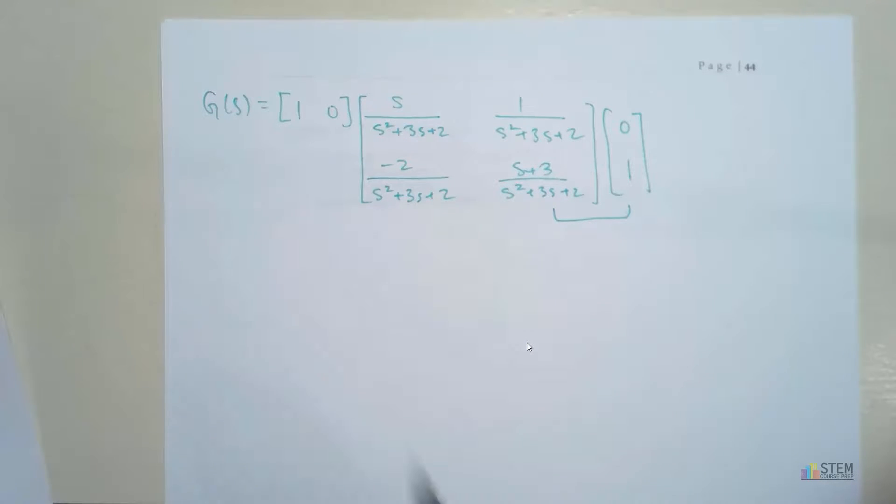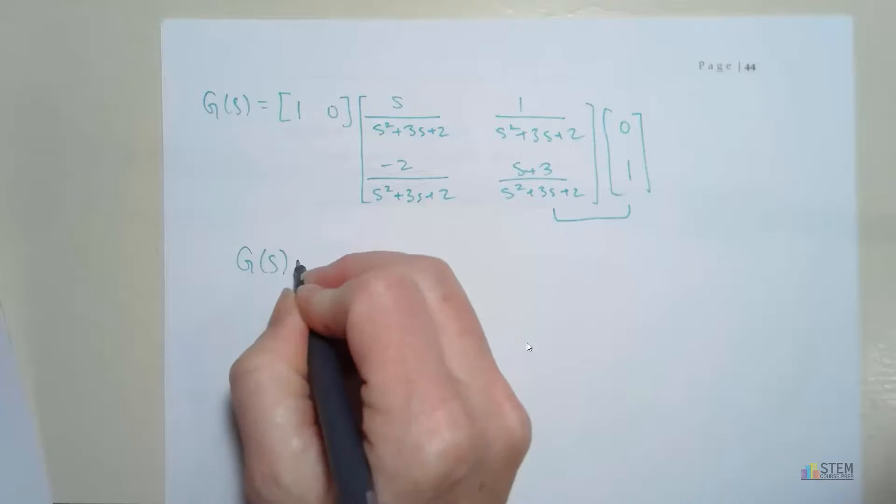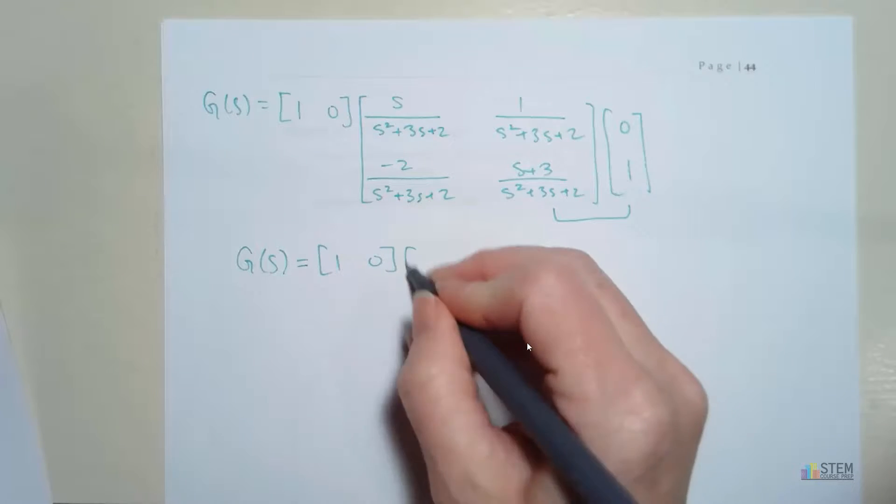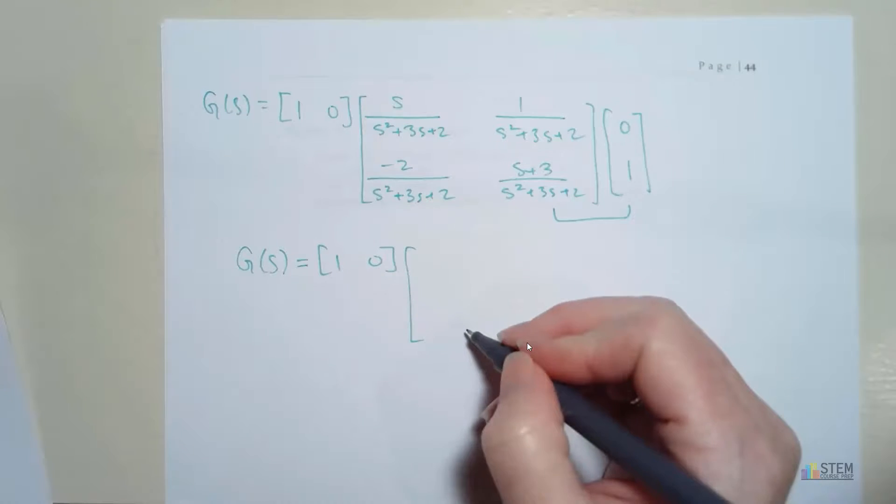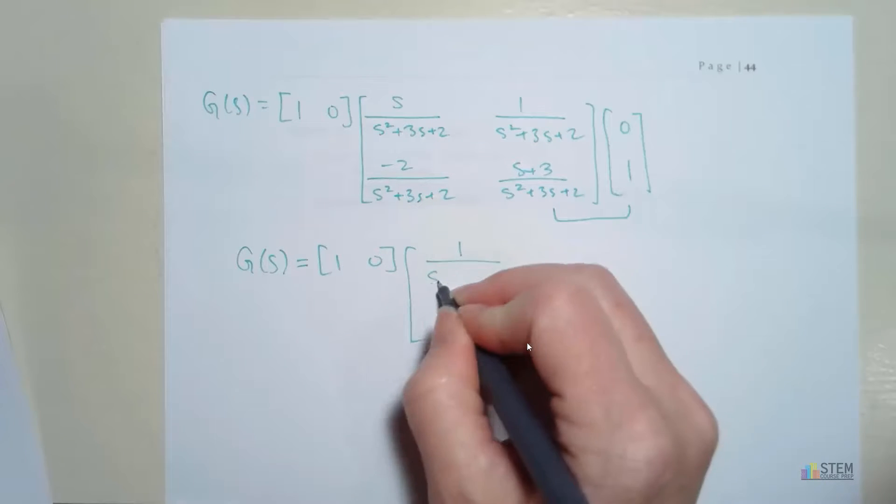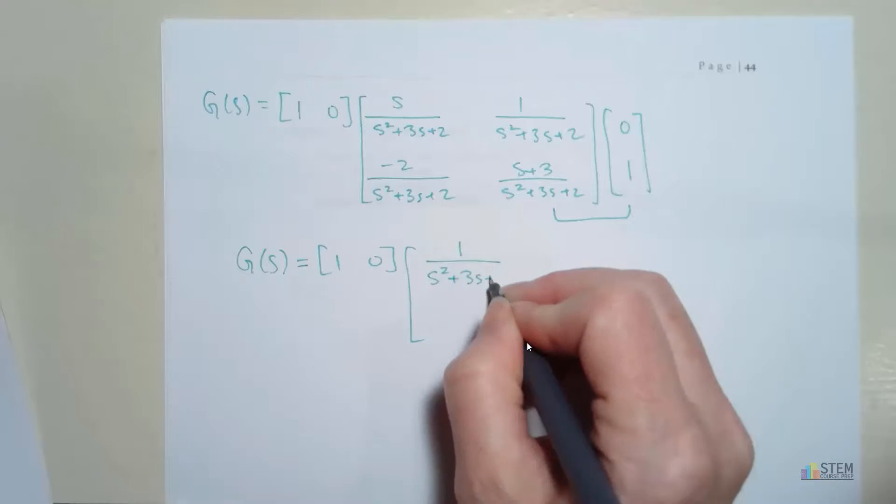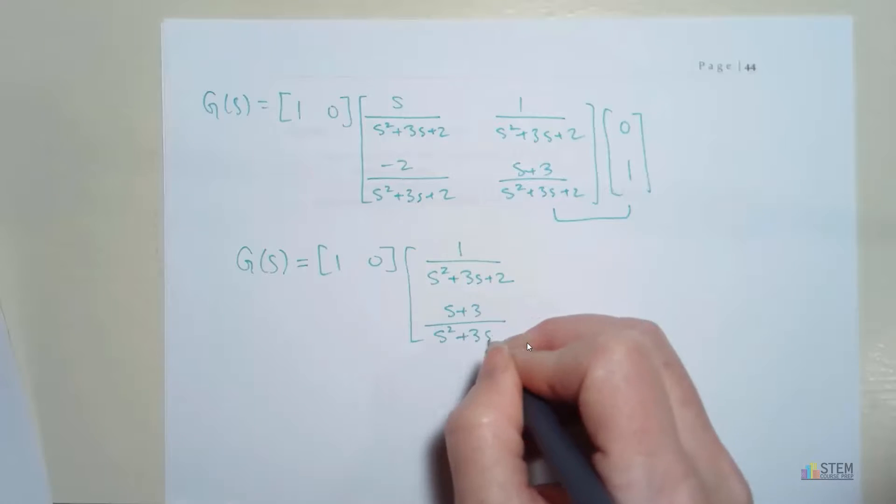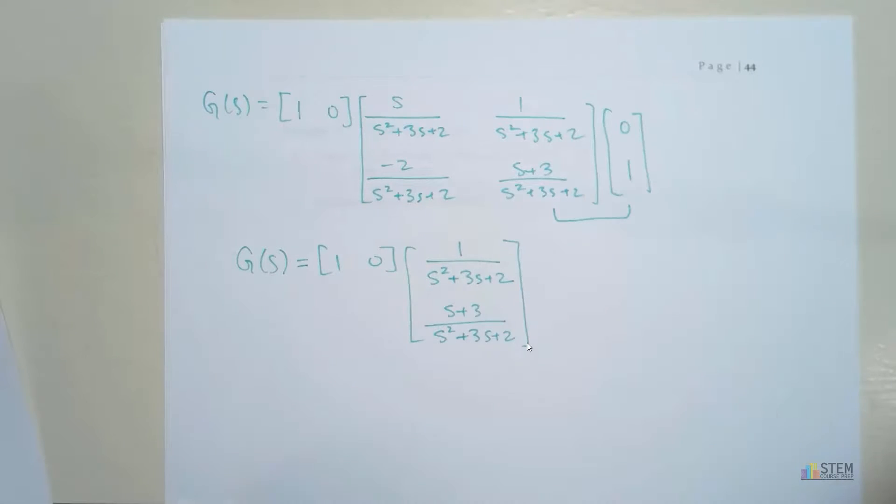So if we do that, we're going to end up with g(s) equals matrix C times a column vector. We're going to end up with 1 over (s squared plus 3s plus 2), and then (s plus 3) over (s squared plus 3s plus 2).